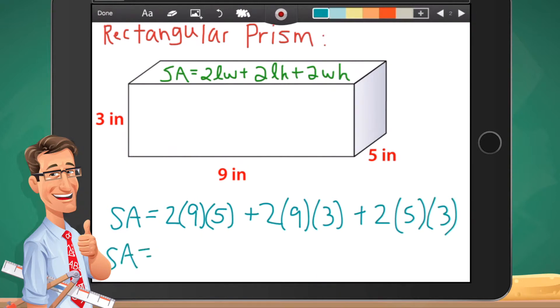You should do, let's see, 2 times 9 times 5 is 90, plus 2 times 9 times 3 is 54, plus 2 times 5 times 3 is 30. You add them all up, you get 174 inches squared. It's important to remember that anytime you talk about area, you're talking about squared units, exponent of 2. So let's move on.